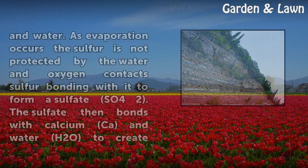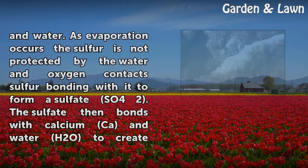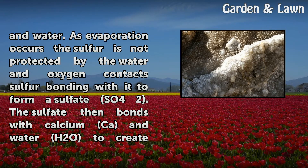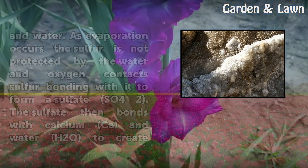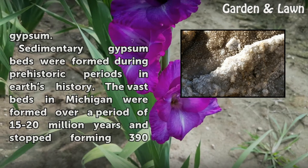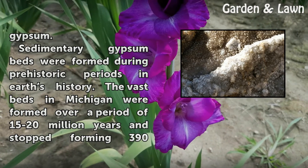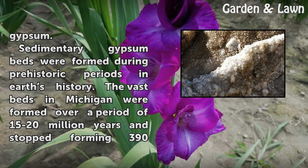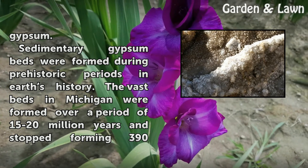Gypsum is made up of oxygen, sulfur, calcium, and water. As evaporation occurs, the sulfur is not protected by the water, and oxygen contacts sulfur, bonding with it to form a sulfate (SO₄²⁻). The sulfate then bonds with calcium (Ca) and water (H₂O) to create gypsum.